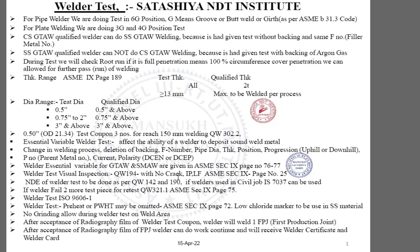Essential variables for GTAW and SMAW are given in ASME Section 9. Visual inspection points are given in QW194. It is written there that cracks are not acceptable, incomplete penetration is not acceptable, and lack of fusion is not acceptable. These three points determine during the first root run whether the welder can continue or not. Incomplete penetration is the most common point of rejection — keep this in mind.